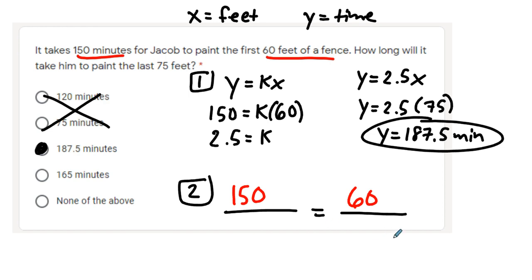If feet go on this side though, then feet need to be here. x goes here, and if you solve using cross-product property, you're going to get 187.5 again.